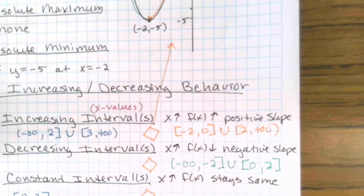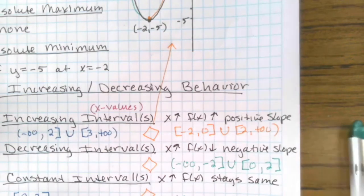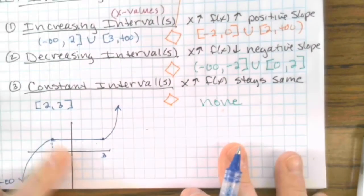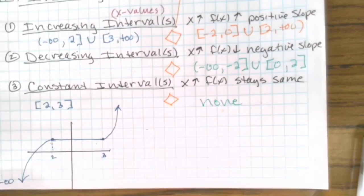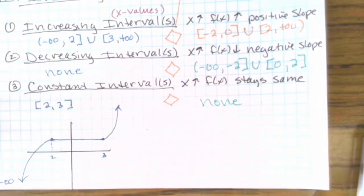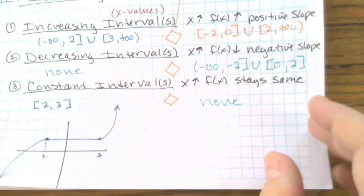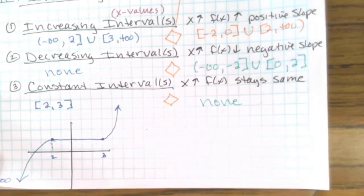Now we're going to do decreasing. This interval is decreasing — negative infinity up to x equals negative 2, so negative infinity up to negative 2. And then this interval here is also decreasing, from 0 to 2, in union with 0 to 2. We're giving only the x values where this is happening. For constant intervals in this graph, there are none.